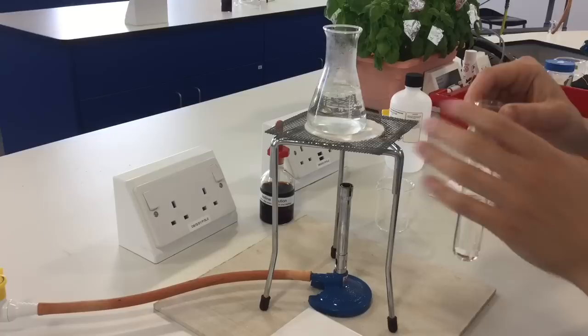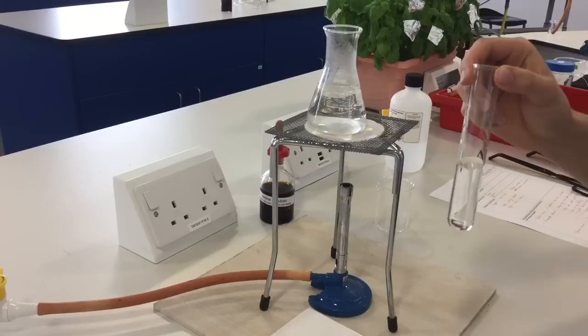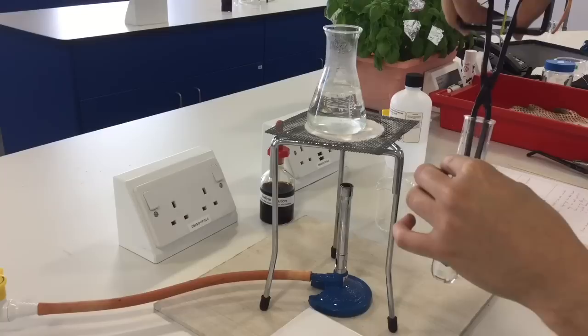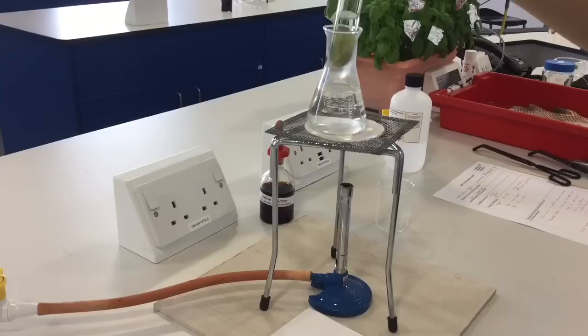Wipe up any spillages and any residues on the outside of your boiling tube before you start the next step. Once that's all safe, you can pop your leaf into your boiling tube and make sure it goes right down to the bottom using your tongs.